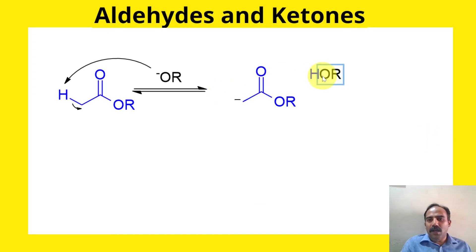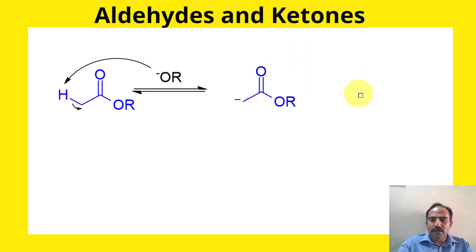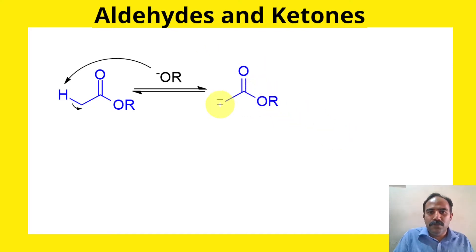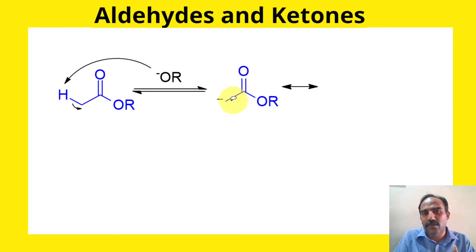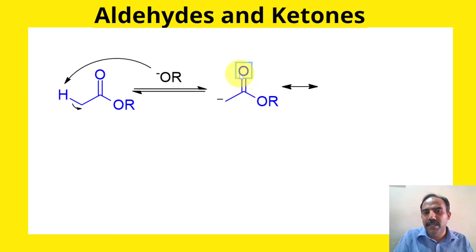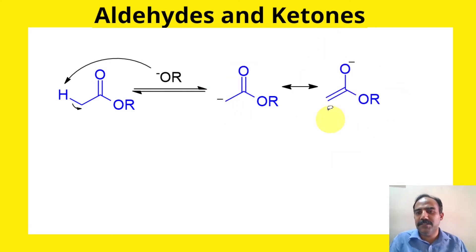RO minus picks up a proton from the ester, and this becomes a negatively charged species while the base becomes an alcohol. This carbanion is stabilized by the adjacent carbonyl group. The two electrons move between the carbanion carbon and the carbonyl carbon, forming a new pi bond, while the old carbonyl pi bond breaks and both electrons go to oxygen, giving oxygen a negative charge. This species is called an enolate.